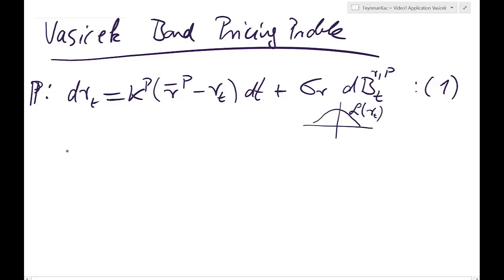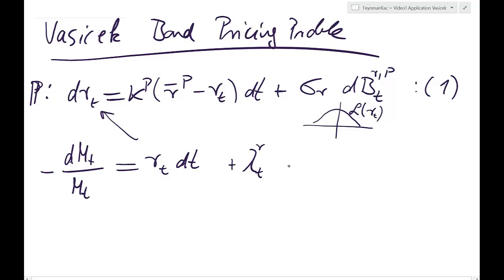Vasicek also implicitly assumes that the stochastic discount factor has the following shape, following the notation from the lecture notes. So dM_t — the change in the SDF — is minus r_t dt, plus the market price of risk for interest rate risk times the systematic risk in the economy, which is the shock to the risk-free rate — that same sigma_r dB.